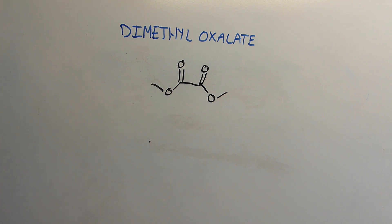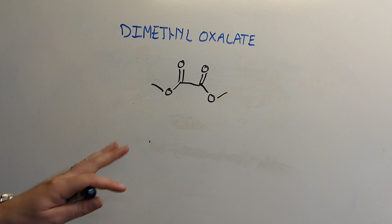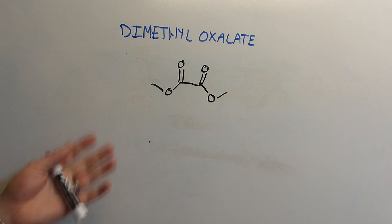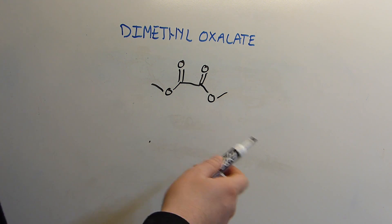Now there are several reactions I have planned for dimethyl oxalate — one of which is super secret and super awesome, and I should be able to make some really cool things with it. The other one is for a compound called TCPO, which is a precursor to glow sticks. It's used to react with hydrogen peroxide in the glow stick material to create oxygen radicals which excite a dye, and when it falls back to ground state it emits light. TCPO stands for trichlorophenyl oxalate.